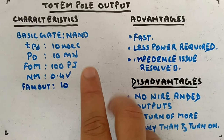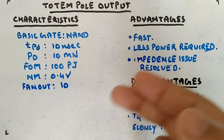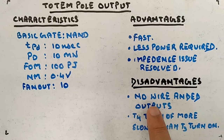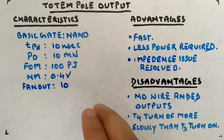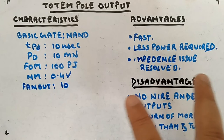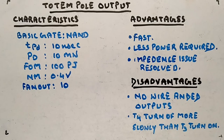One disadvantage is that you cannot wire-AND the outputs in a totem pole circuit. If you take the output of one totem pole gate and connect it with the output of another totem pole gate, you cannot expect a wire-AND result. A separate circuit — TTL open collector — is specifically used for wire-AND operation. We will study that next. The reason you cannot connect two totem pole outputs is that it will cause a large current flow, which I will explain when I discuss the motivation for open collector.